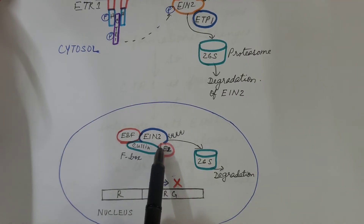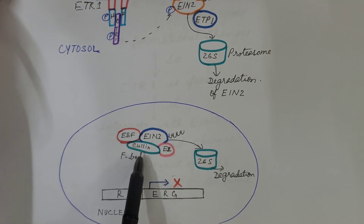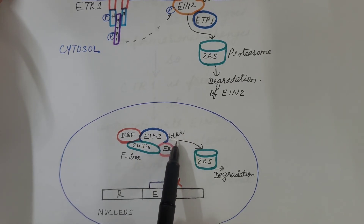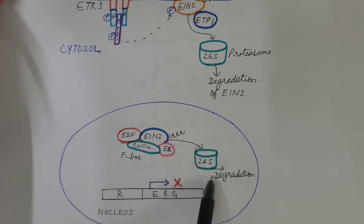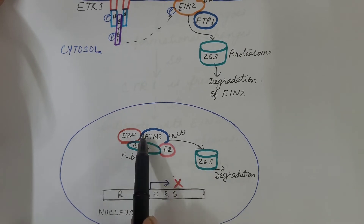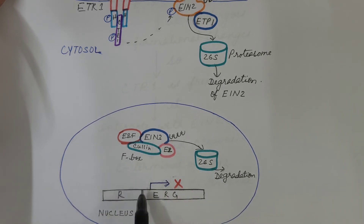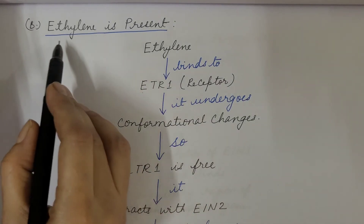In the nucleus, EIN3, which is the transcription factor, comes and binds with the F-box protein, which consists of EBF and E2, where E2 is the ligase. E2 then tags EIN3 with polyubiquitin, leading to polyubiquitination of EIN3, followed by proteasomal degradation of EIN3 by the 26S proteasome. So EIN3 transcription factor is degraded; hence it does not bind with the regulatory region of ethylene response genes, and no transcription takes place.